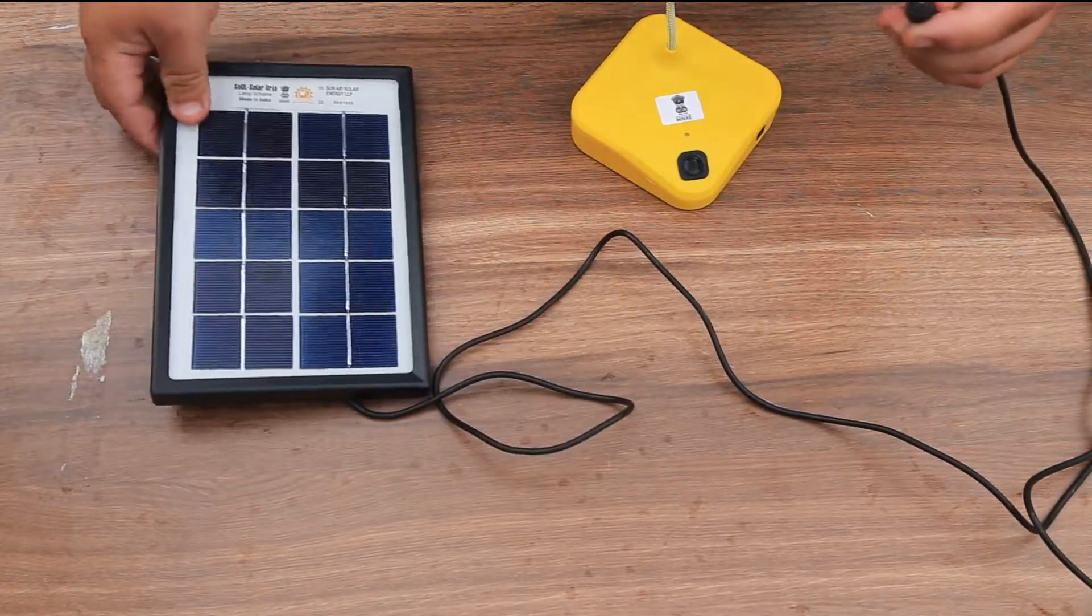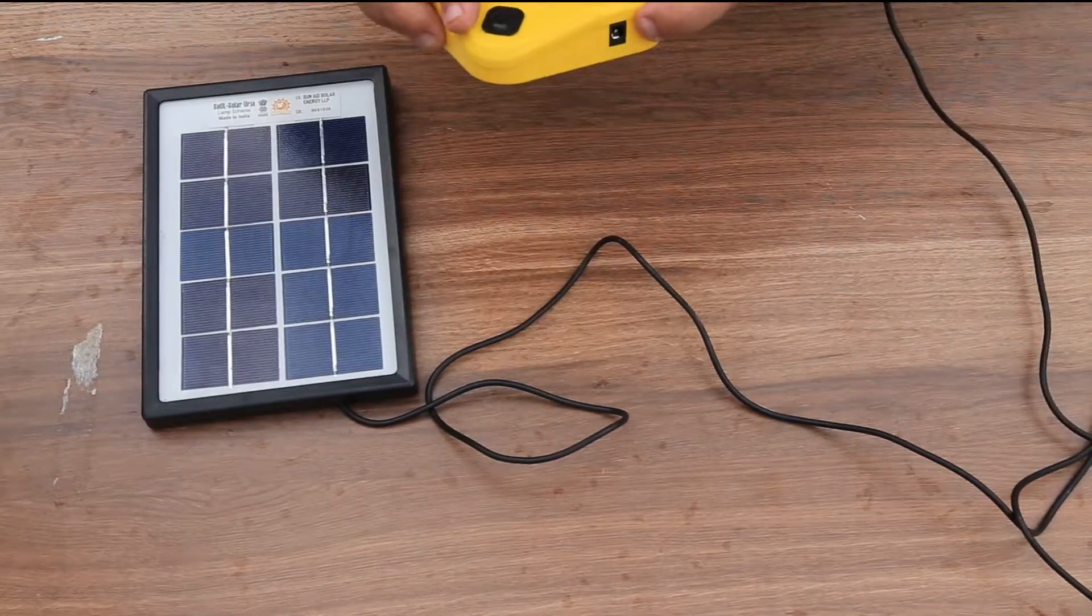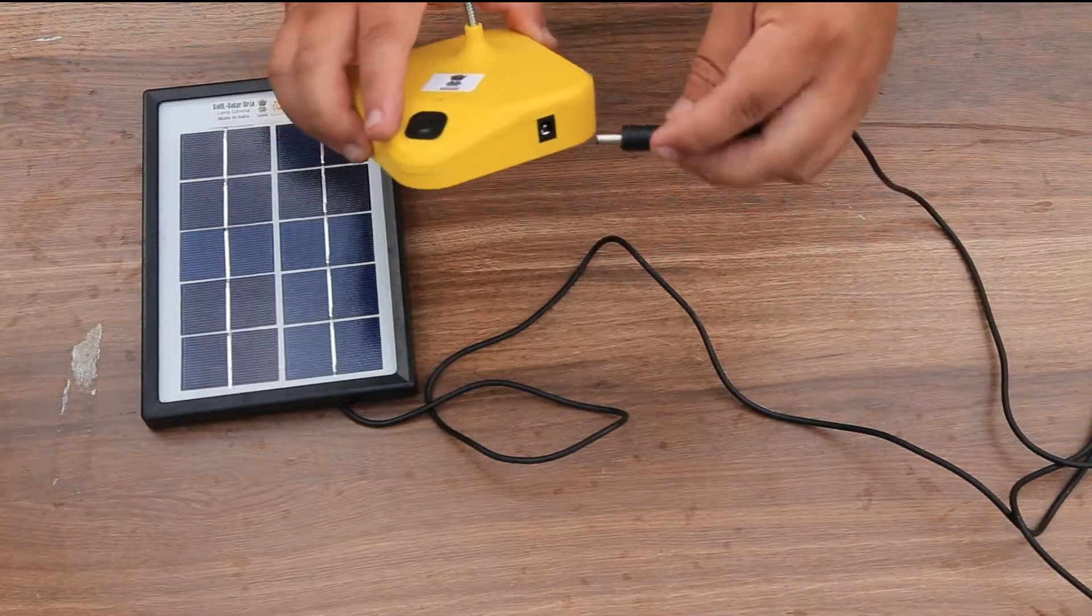The DC pin connects to the lamp's DC socket. We will insert this DC pin into the socket.